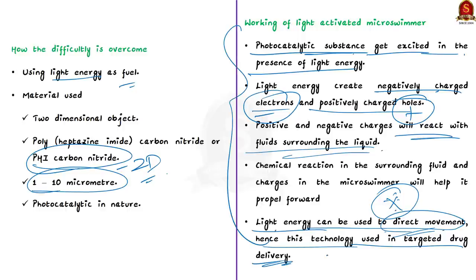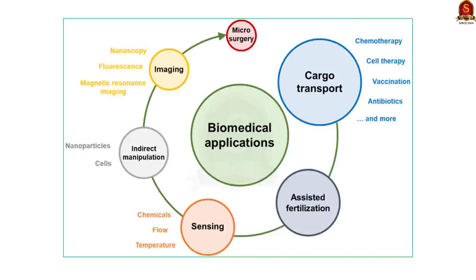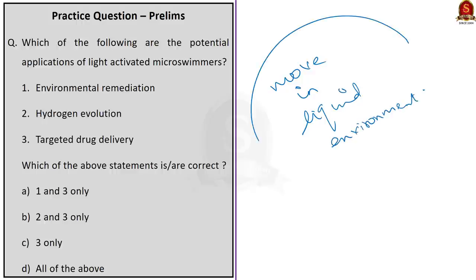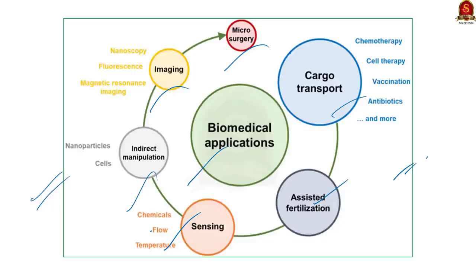If you found this section a bit technical, don't worry — UPSC will never ask what material is used for making microswimmers or how they move using light energy. For our examination, we can expect questions from the application part. All the biomedical applications of this technology are shown in the image here — you can pause the video and have a look. This is what is important for your exams. In summary, we saw that microswimmers are microscopic objects with the ability to move in liquid environments; natural microswimmers include bacteria, archaea, sperm, and micro animals; and we saw the biomedical applications of this technology.